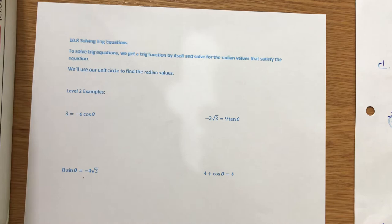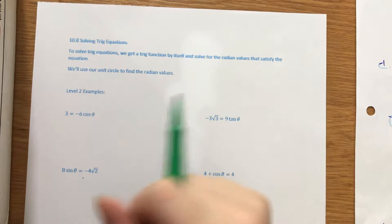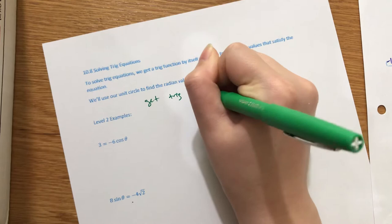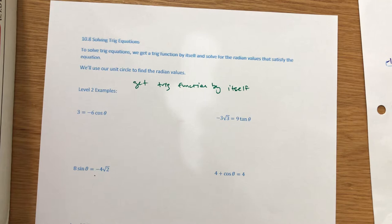To solve trig equations, we get a trig function by itself and then solve for the radian values that satisfy the equation. We're going to use our unit circle to help us find the values. The trick is you literally just get the trig function by itself first, then think about what radian angle theta makes that true.